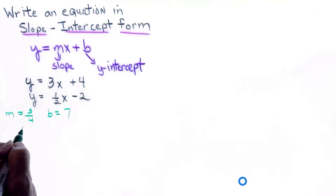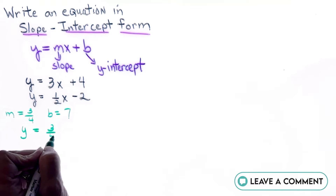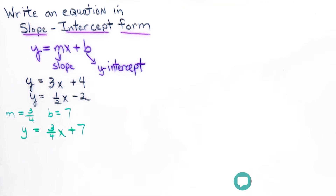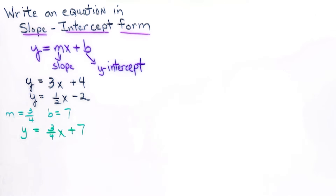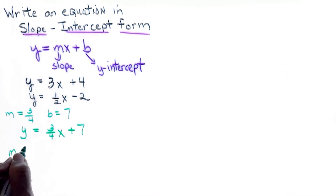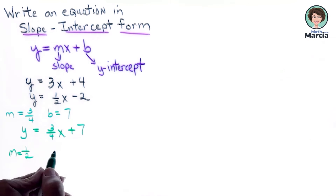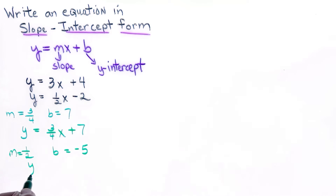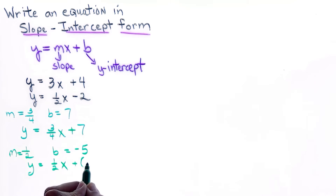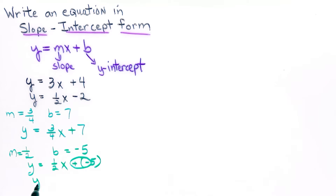Remember we must always have the letter y and the letter x. If I have a slope of one-half and a y-intercept of negative 5, we would not write plus negative 5 — you do not put the two symbols together. The best way of writing this is y equals one-half x minus 5.